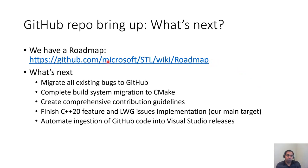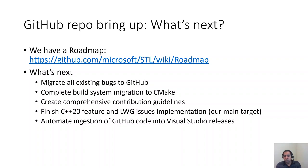We have a roadmap available on the STL GitHub wiki. First, we would like to finish migrating all of our existing bugs to GitHub so all STL issues are in one place. There are also still some parts of the STL that don't currently build with CMake — specifically the CLR components — and we will fix that. Our main target continues to be focusing on completing the C++20 standard implementation. Finally, we have set a goal to automate the process of merging code from the GitHub repo to Visual Studio, so that process will be faster and less error-prone.